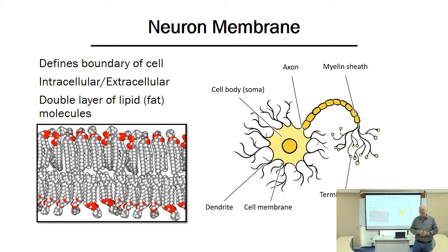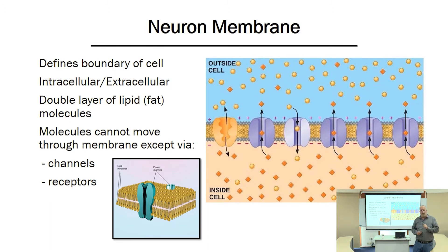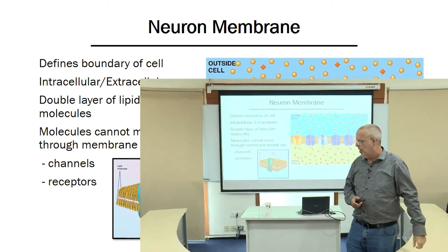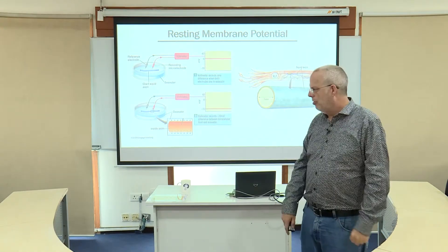The membrane covers the neuron — it's very similar to your skin. It keeps the inside of the neuron distinct and separate from the outside. The membrane is composed of a lipid bilayer. Lipid just means fat. The important part is that molecules cannot flow directly back and forth across that membrane. Rather, there must be channels and receptors — think of just a hollow tube — embedded within the membrane. It's only through these channels and receptors that molecules can flow into or out of the neuron itself.